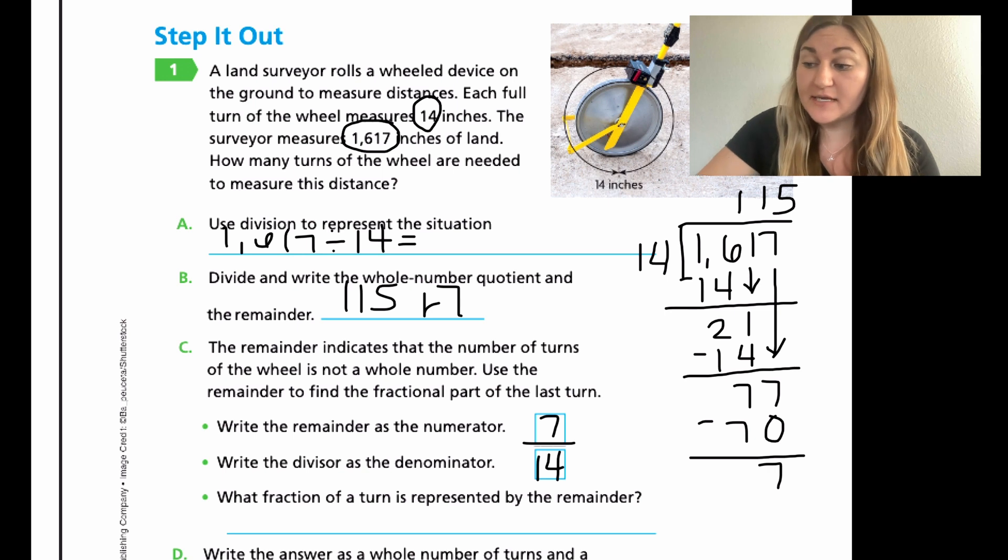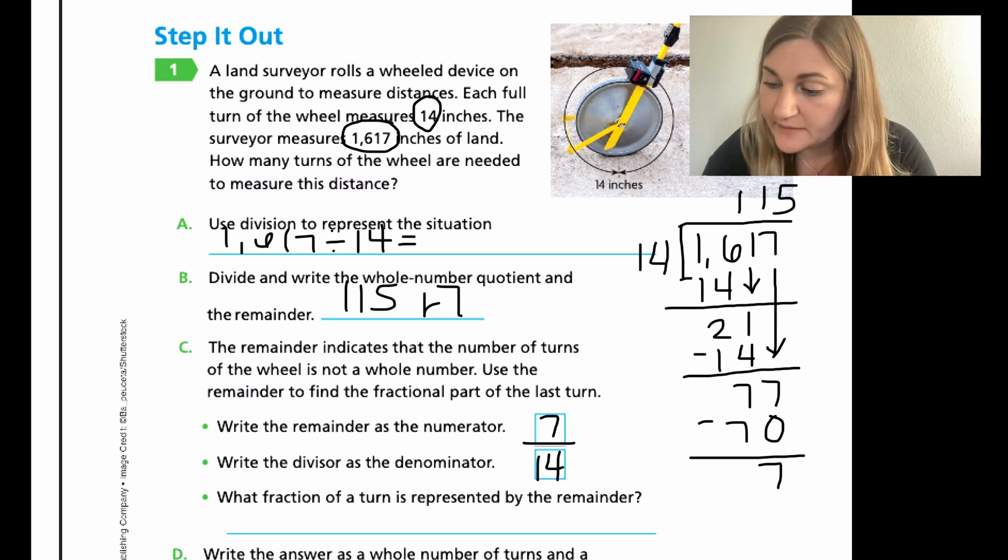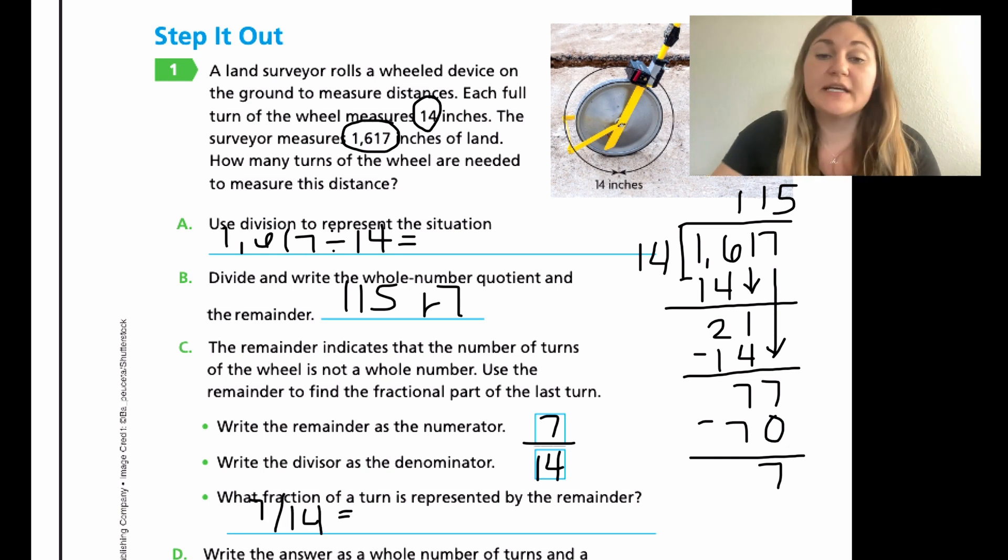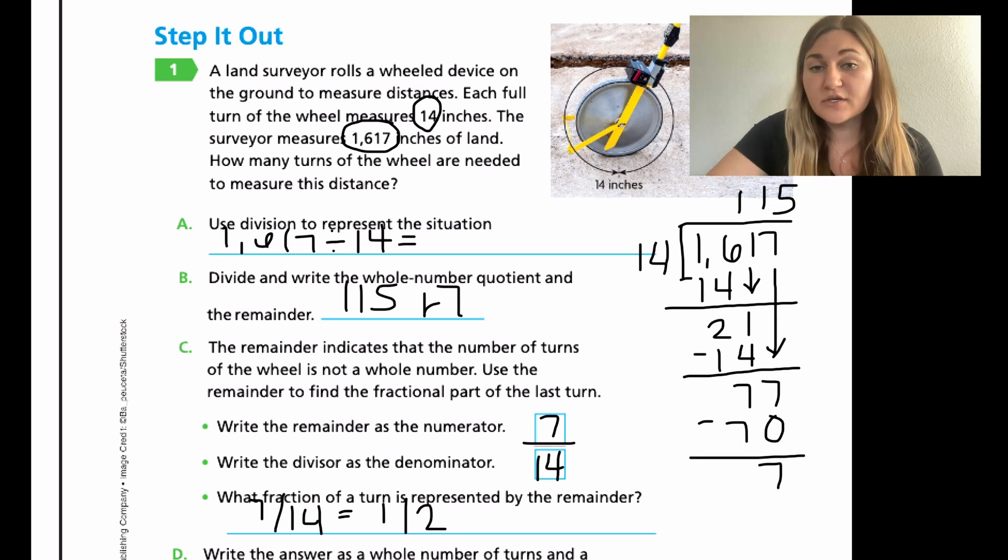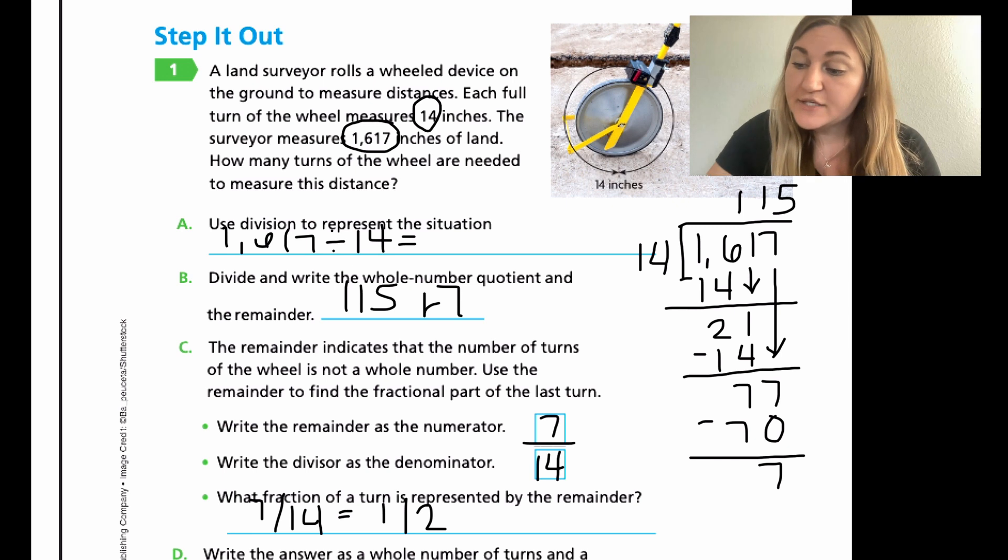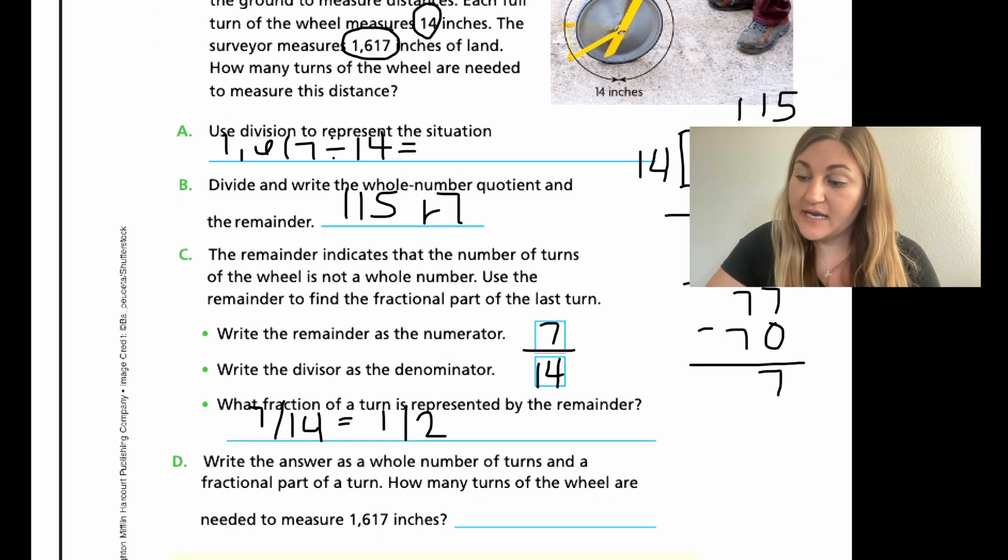So what fraction of a turn is represented by the remainder? If we look at the fraction, it says 7 over 14. I know the relationship between 7 and 14 is that 7 times 2 is 14. If I wanted to divide both of these numbers, I would divide both by 7 to get an equivalent fraction. 7 divided by 7 is 1, and 14 divided by 7 is 2. So an equivalent fraction here is going to be half. If my wheel was turning 14 times and I only got 7 times, it's half. The wheel only turned halfway.